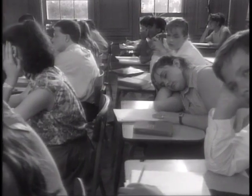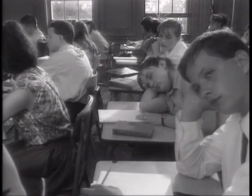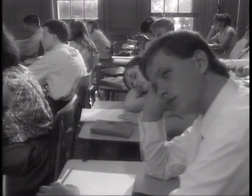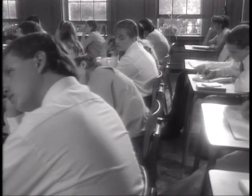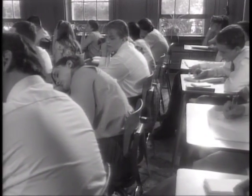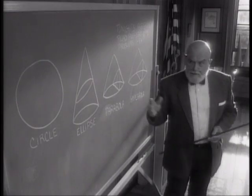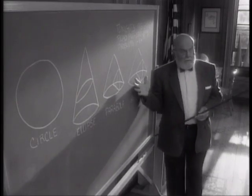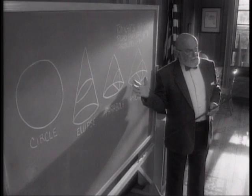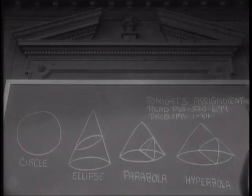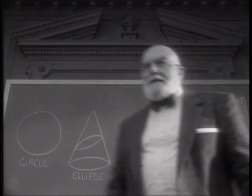Note well that each cone has two naps, and consequently, each hyperbola has two branches. These are the conic sections. Know them well.